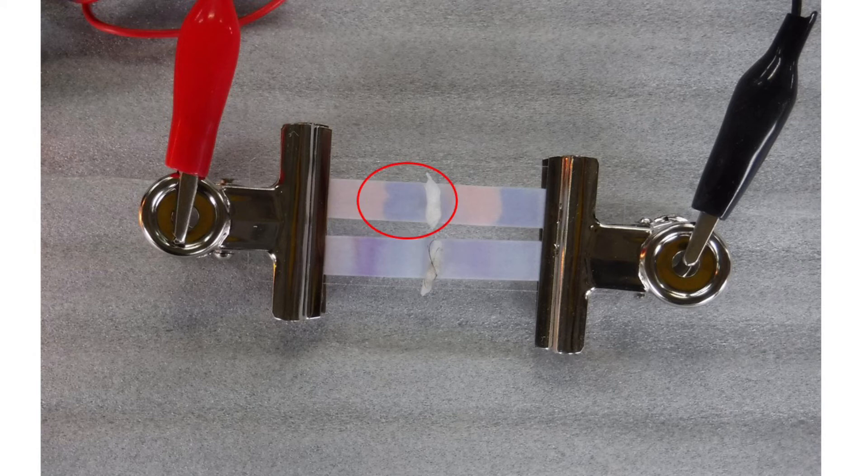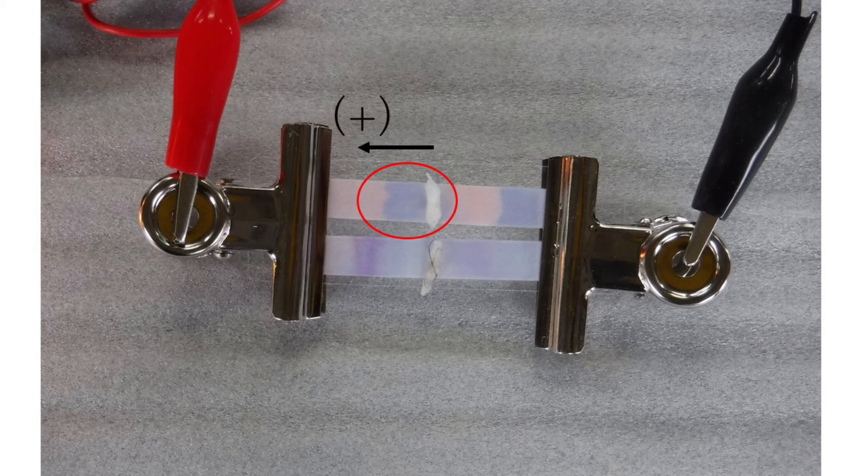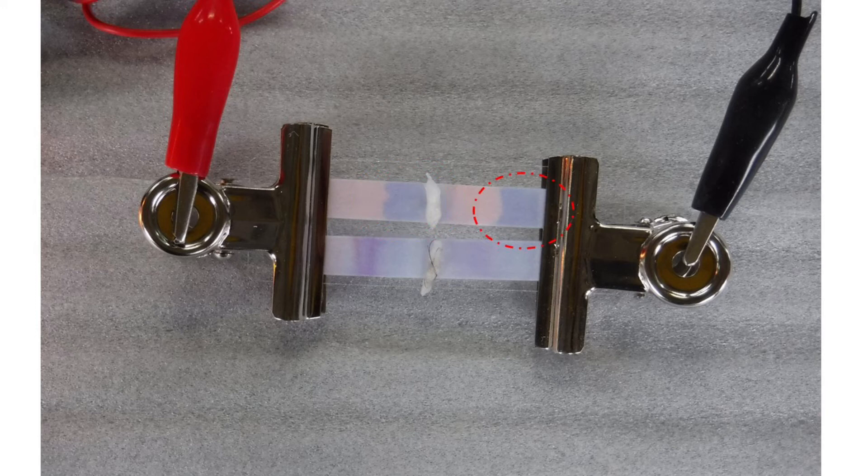The blue part showing basicity moves to the positive electrode on red litmus paper. Part of the red litmus paper at the negative electrode turns blue because hydroxide ion is produced at the negative electrode.